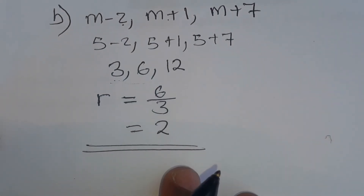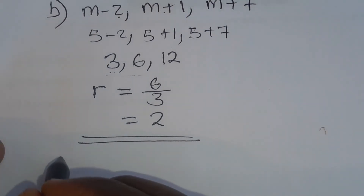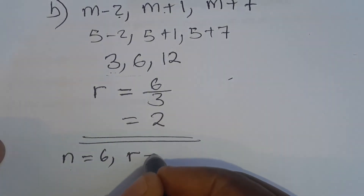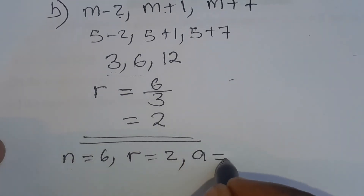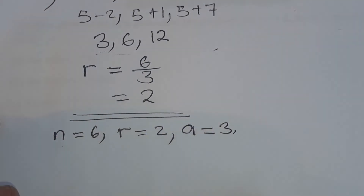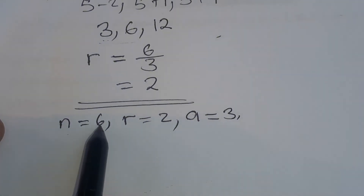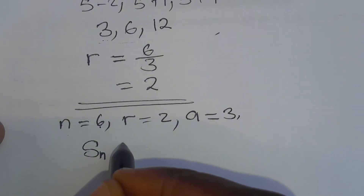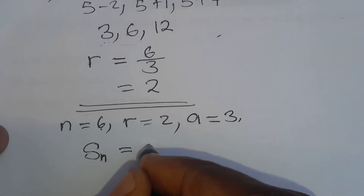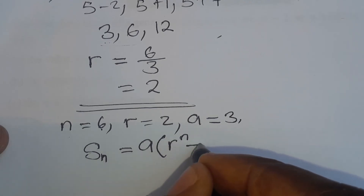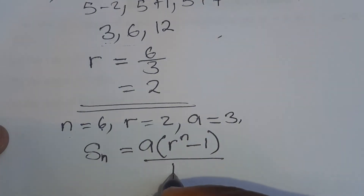The next question says find the sum of the first 6 terms. Since n is 6, R is 2, and the first term A is 3, we use the formula: S_n equals A times (R to the power n minus 1) over (R minus 1).